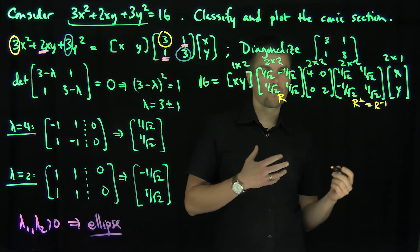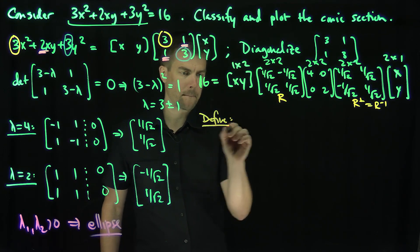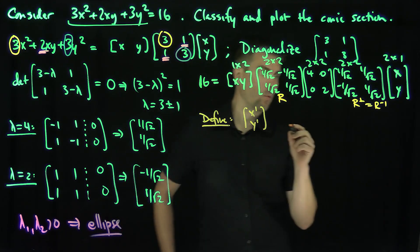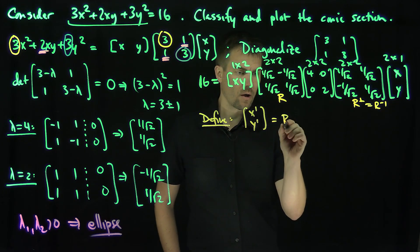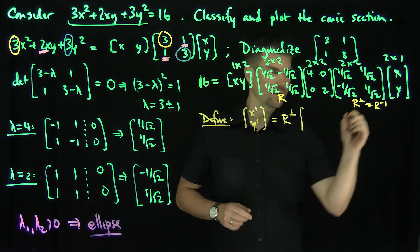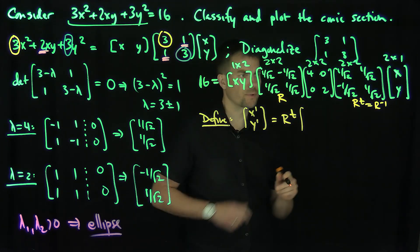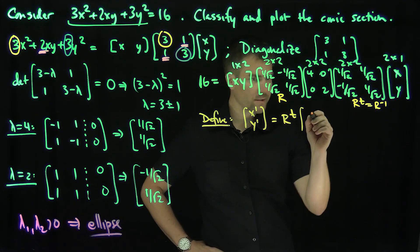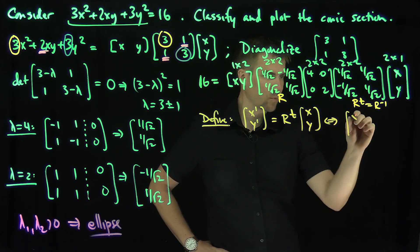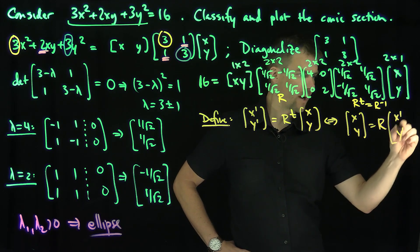Now the key feature is we really have what I'm going to define now. Define [x', y'] to be R transpose of [x, y], which is equivalent to saying that [x, y] = R[x', y'].